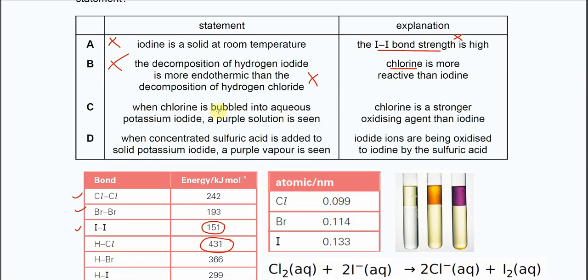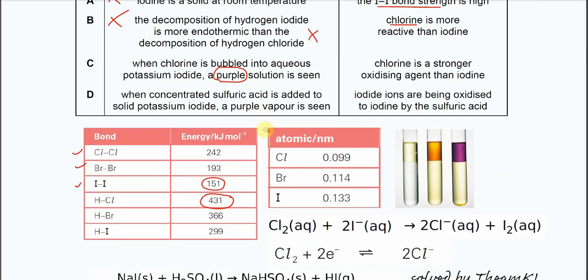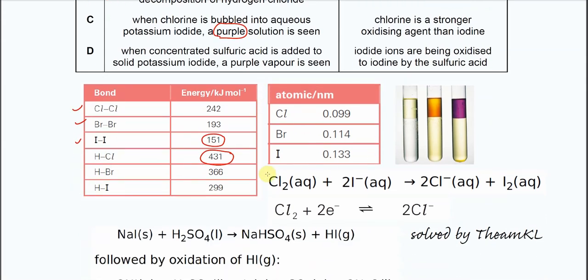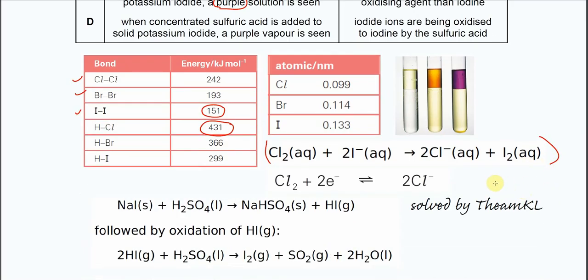For C, when chlorine is bubbled into aqueous potassium iodide, a purple solution is seen. This one looks quite good and almost correct except this part. So this is a displacement reaction. So please refer to this equation. So for this one, we know that chlorine will displace the iodide or this iodine from iodide solution. It means when chlorine reacts with iodide, so chlorine itself will reduce to chloride and the iodide will oxidize to iodine. So we say that chlorine will displace the iodine from iodide solution.